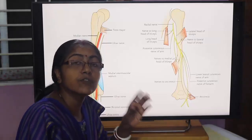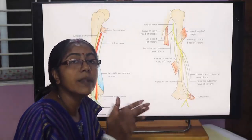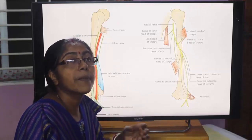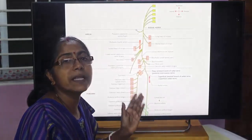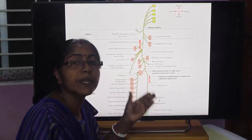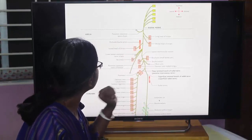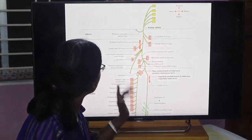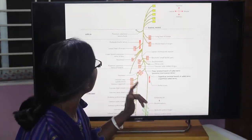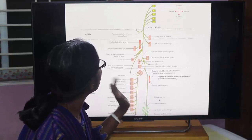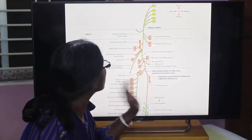For short-answer questions: Radial nerve — mention its root value: C5, C6, C7, C8, T1 (posterior division). Its supplied muscles include all muscles of the posterior compartment, including: triceps brachii, supinator, extensor carpi radialis brevis, extensor digitorum, extensor digiti minimi, extensor carpi ulnaris, abductor pollicis longus. The deep terminal branch is called the posterior interosseous nerve; the superficial terminal branch is called the superficial radial nerve.